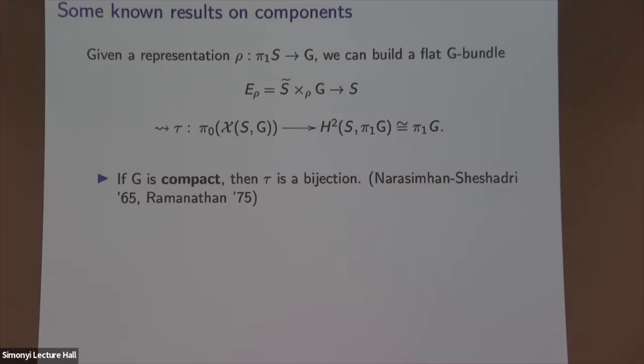When G is compact, Narasimhan–Seshadri in 1965 for SU(N) and Ramanathan for general compact groups proved that the map τ is a bijection. So components of the character variety for compact groups are classified by this characteristic class. They proved theorems about moduli spaces of holomorphic bundles to achieve this.